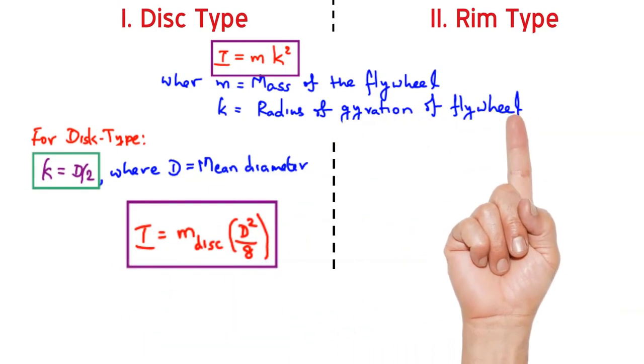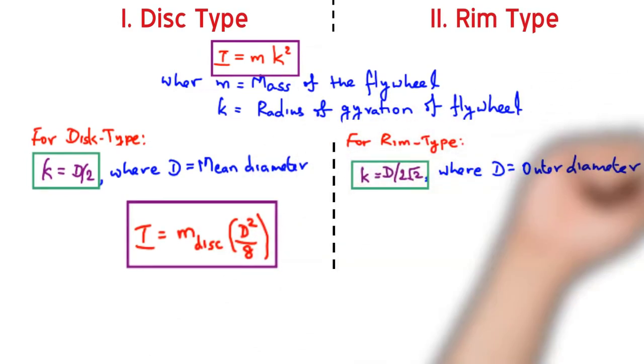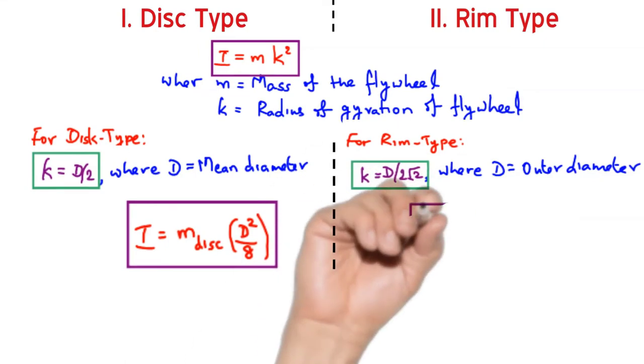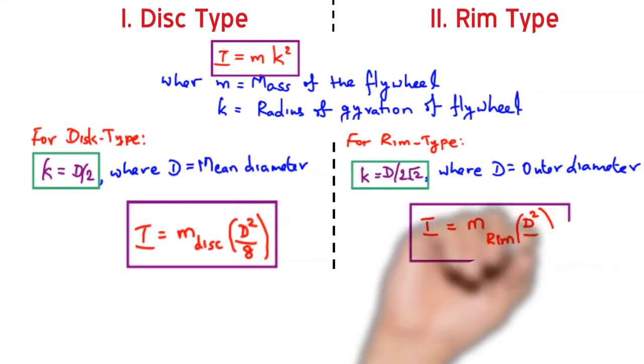Whereas for a typical rim type, the radius of gyration may be given as d upon 2 root 2. So substituting that formula in the same I equation, I would be getting I is equal to m rim d squared by 4.